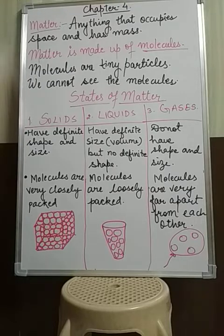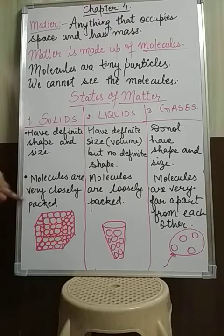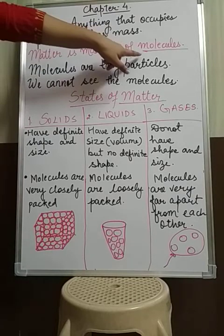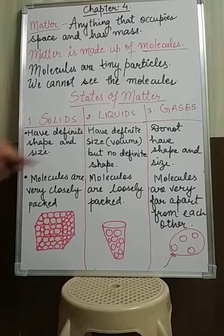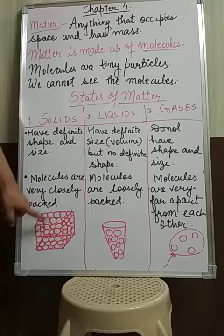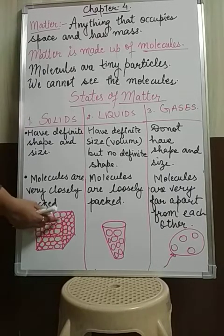So for solids, the first point is they have a definite shape and size. Next, molecules in solids are very closely packed. That means, when you look at a solid surface, all solids are made up of molecules, and the molecules in solids are very closely packed — there is no intermolecular space. Intermolecular space means the space between the molecules.